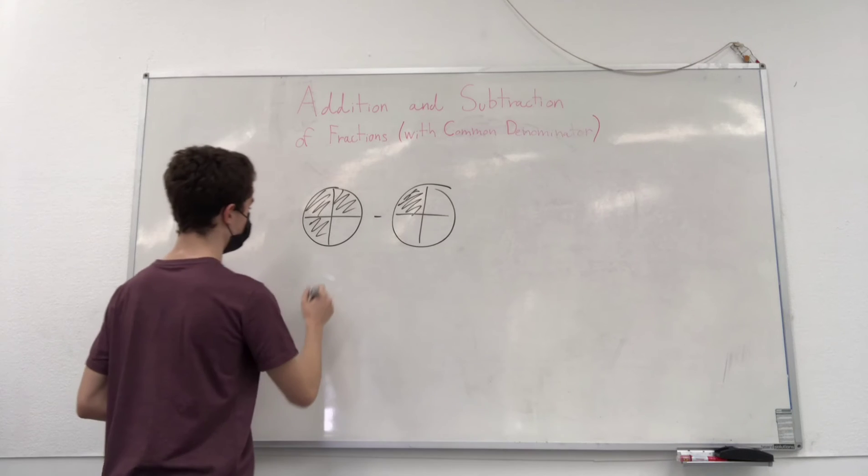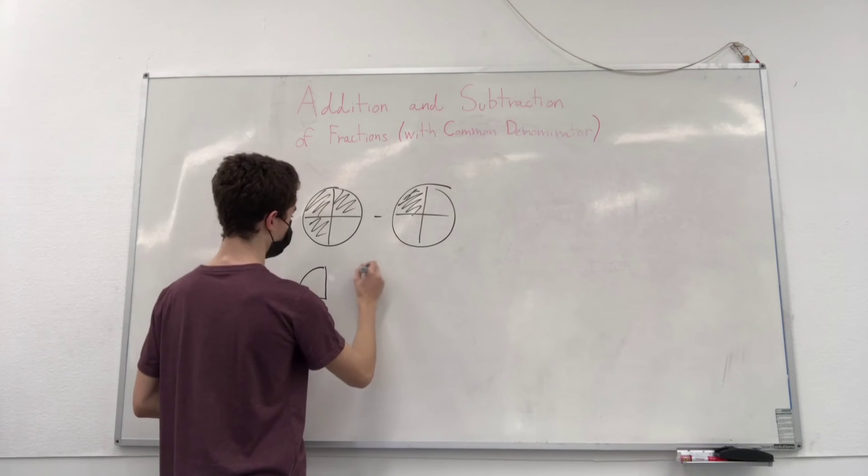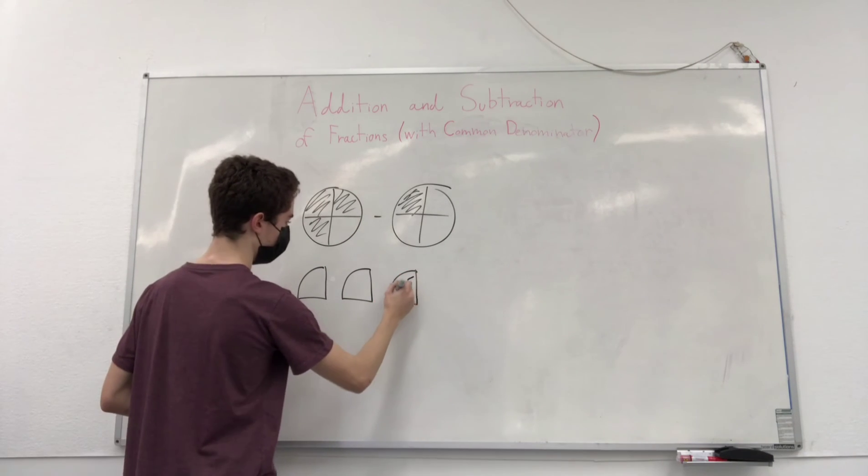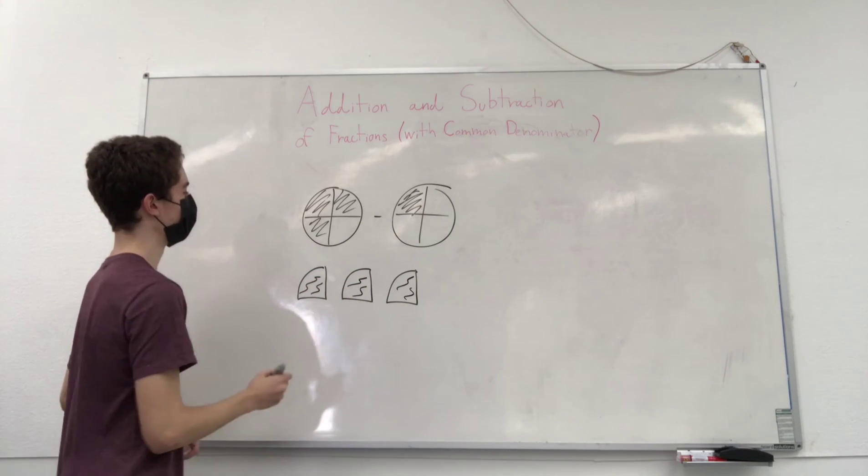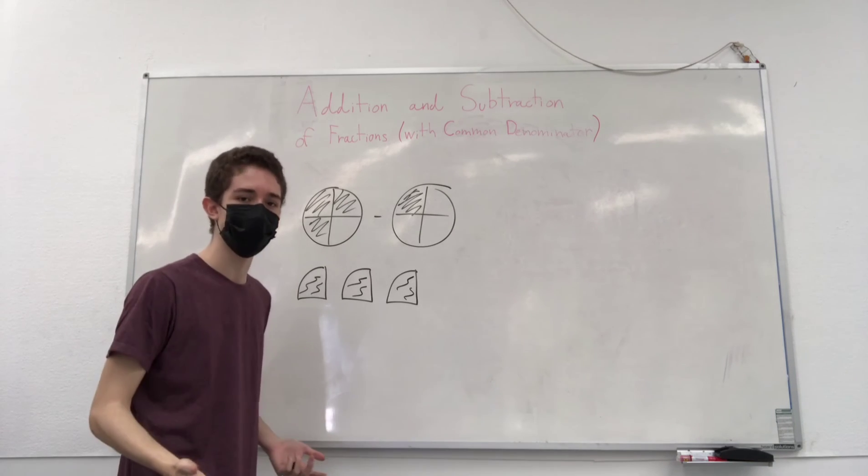And you could also write this as individual pizza slices, right? We have one, two, three slices of marvelous catapulted pizza. And you want to take out one of those parts. In other words, here you ate one of those parts.